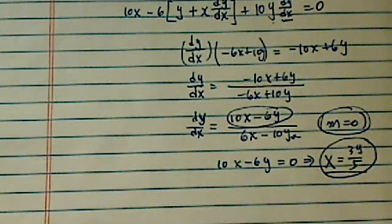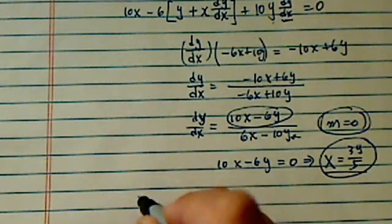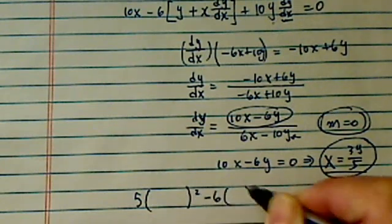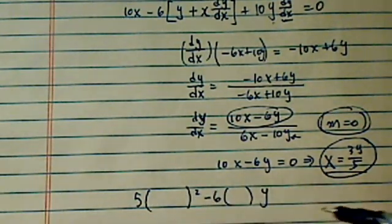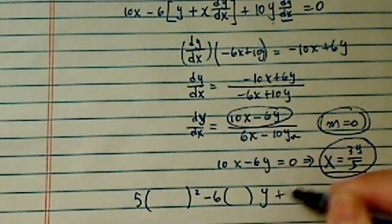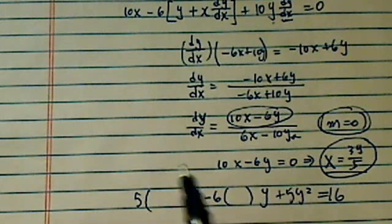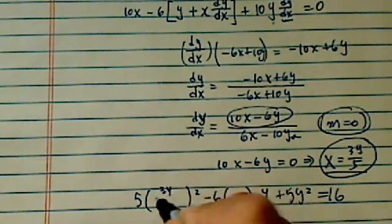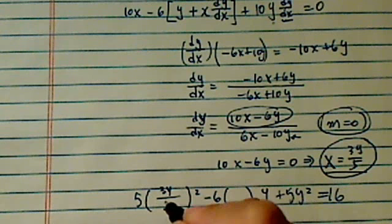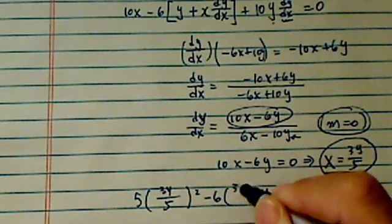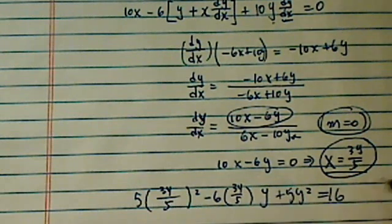And now I'm going to plug this equation back into my ellipse. So I have 5x squared minus 6x times y. I'm leaving space for the x here. And then plus 5y squared. I'm going to use the ellipse equation to figure out what point I'm looking at. So here's this 3y over 5, that's 3y over 5, and then 3y over 5.